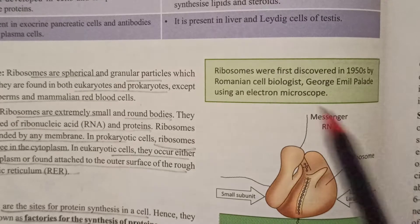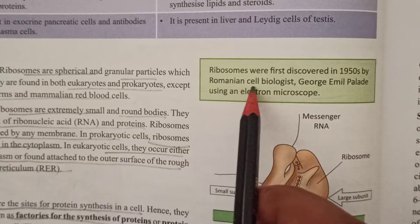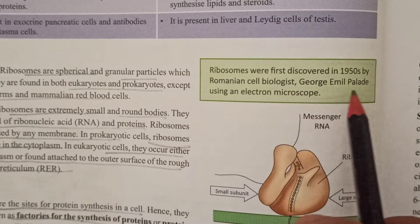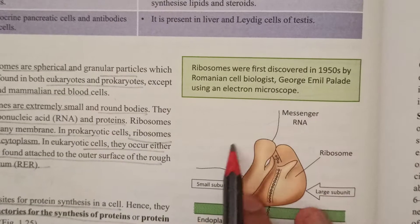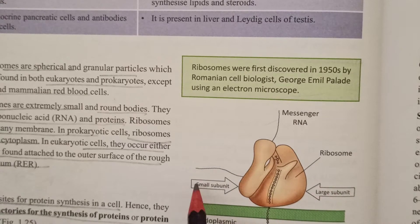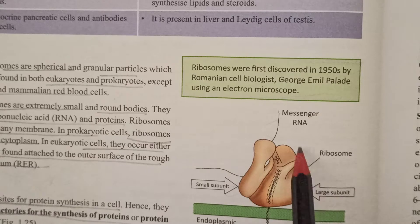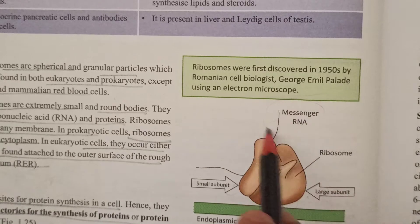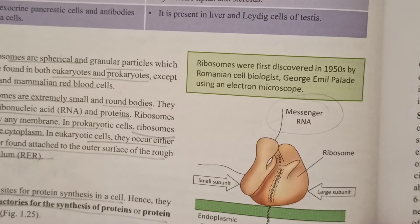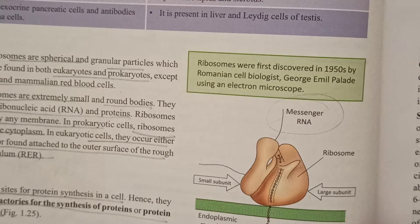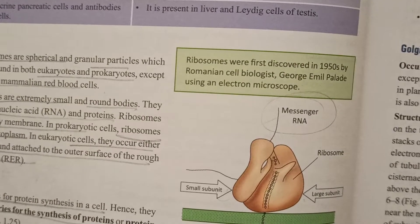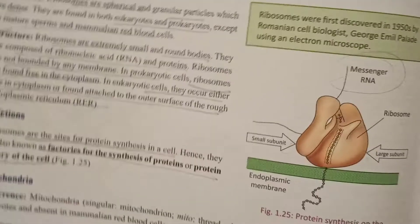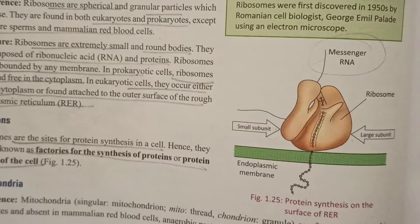Next are ribosomes. They were first discovered by Romanian cell biologist George Emil Palade using an electron microscope. Ribosomes have a small subunit and a large subunit. Messenger RNA provides information to the ribosome, which uses the mRNA (ribonucleic acid) to synthesize proteins.